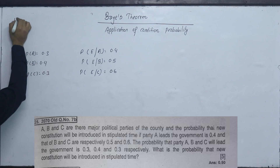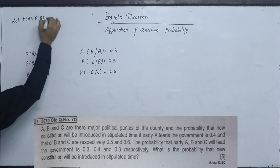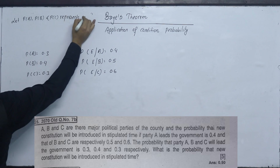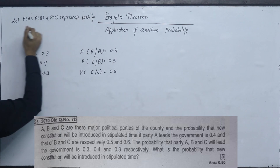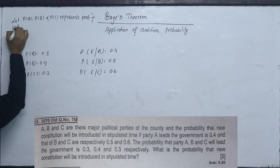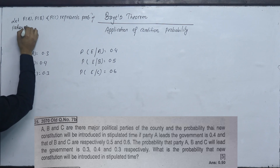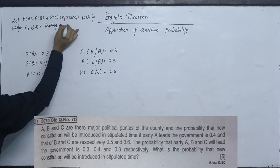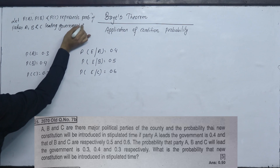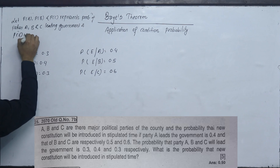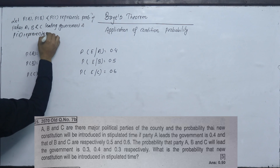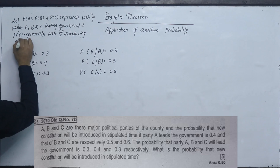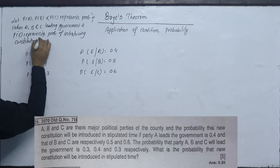Let PA, PB, and PC represent the probability of party A, B, and C leading the government, and let PE represent the probability that the constitution will be introduced in stipulated time. PA = 0.3, PB = 0.4, PC = 0.3, P(E|A) = 0.4, P(E|B) = 0.5, P(E|C) = 0.6.